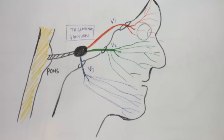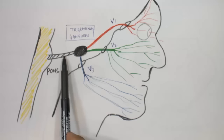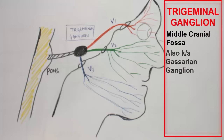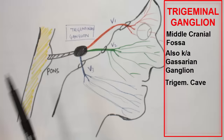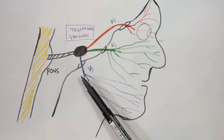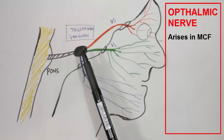Now let's look at the course of the trigeminal nerve, its division into three main branches, and subsequent distribution on the face. The pons is the site of origin of the trigeminal nerve. From the main trunk, the nerve reaches the trigeminal ganglion, which is situated in the middle cranial fossa. In the temporal bone there is a depression known as the trigeminal cave, which is the site for the trigeminal ganglion. From this ganglion, the three main branches — ophthalmic, maxillary, and mandibular — arise.